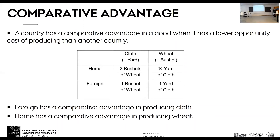To figure out which country has a comparative advantage in what, let's do a quick table. For the home economy, the opportunity cost of wheat is one half — that is, how many units of cloth you give up to get one unit of wheat. The reciprocal, two, is the opportunity cost of cloth — how much wheat you give up to get cloth. For the foreign economy, both opportunity costs are one: to get one additional unit of wheat, you give up one unit of cloth, and vice versa.